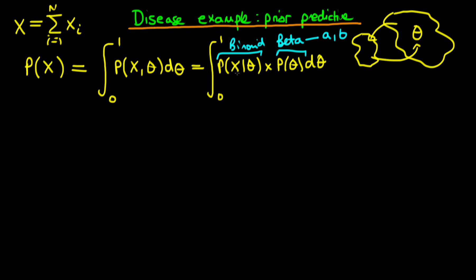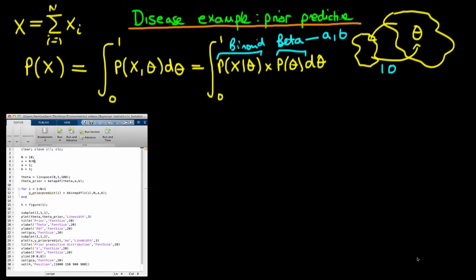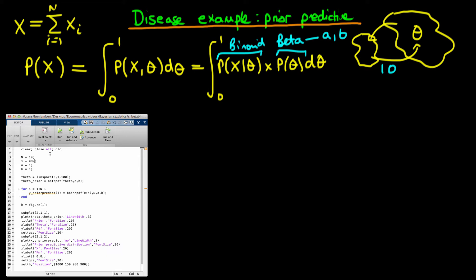Imagine we are taking 10 individuals from the population. Before we observe our data, we'd like to think about which number of people having the disease would be most likely given our prior beliefs. I want to show you using a MATLAB simulation exactly how the parameters a and b affect the prior predictive distribution. I'm starting with a flat prior — a uniform prior with a and b both equal to 1. In that circumstance the beta prior is in fact a uniform prior, so we'd probably expect the prior predictive distribution to also be relatively flat.